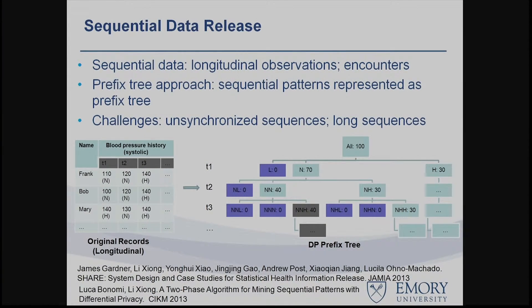That covers multidimensional data for cross-sectional studies. Another common data type for clinical — especially longitudinal — studies is longitudinal data, involving repeated observations about a single patient, such as blood pressure history, genome sequences, hospital encounters, or clinical encounters.